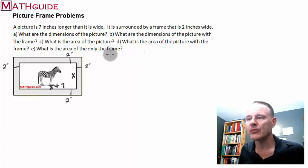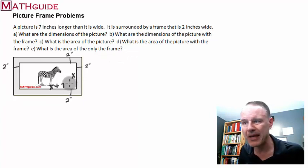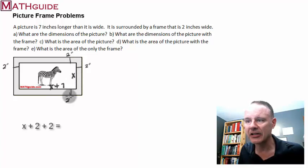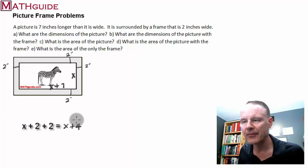Now, as we consider what are the dimensions of the picture with the frame, in other words the whole shebang, I know that this distance right here, this little distance is x, but then I've got two inches there and two inches there. So that means x plus two plus two, that would be x plus four. X plus two plus two, that's x plus four. So that's our new width. That's the width of the picture with the frame.